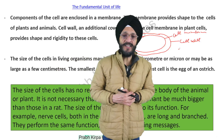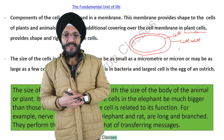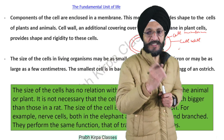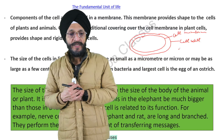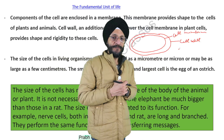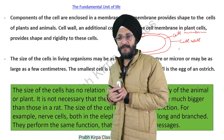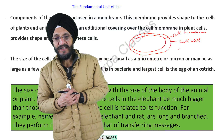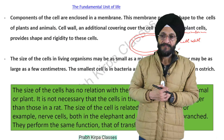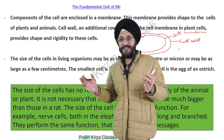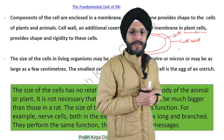The size of cells in living organisms may be very small — as small as a micrometer or micron — or may be as large as a few centimeters. The smallest cell is found in bacteria and the largest cell is the egg of an ostrich. The size of the cell has no relation with the size of the body of the animal or plant.